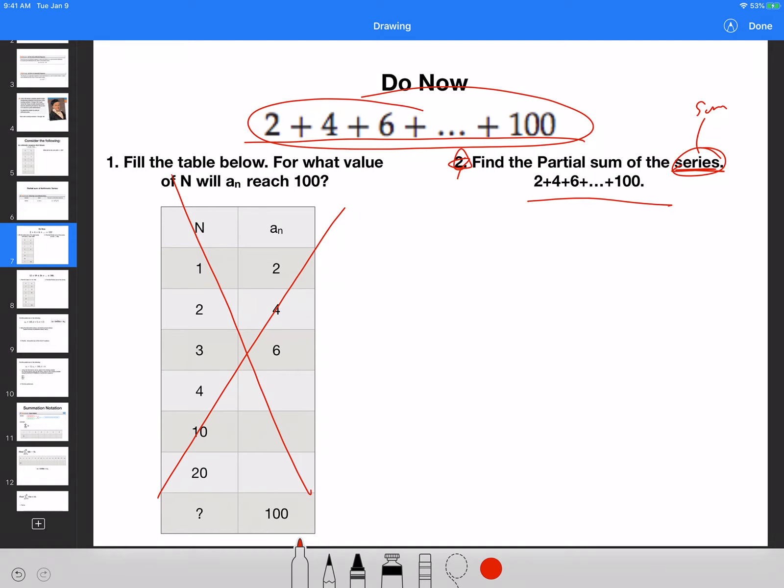If you take a look at this example, the formula is n over 2 times a sub 1 plus a sub n. Here, what we want to do is now we want to look for the nth value. I have the last number, which is 100, and I have the first number, which is 2. So 2 plus 100.